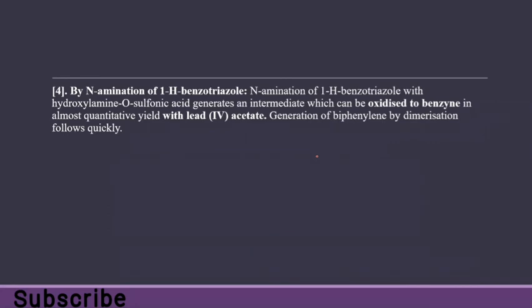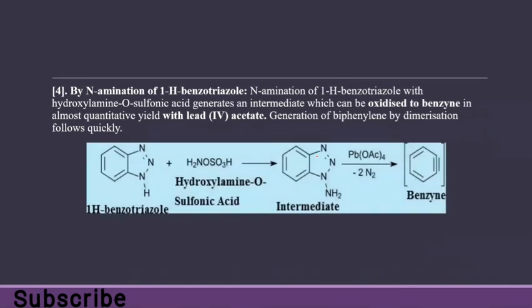The next method is by N-amination of 1-H-benzotriazole. N-amination of 1-H-benzotriazole with hydroxylamine O-sulfonic acid generates an intermediate, which can be oxidized to benzyne in almost quantitative yield with lead acetate. Generation of biphenylene by dimerization forms quickly. The intermediate, by removal of N2 and N2, gives benzyne in the presence of lead.